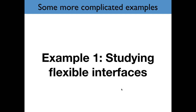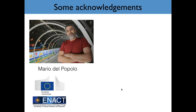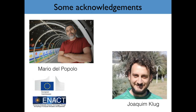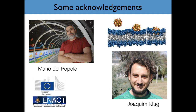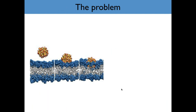My first example is about studying flexible interfaces. This is some work I did recently, about two years ago, as a collaboration with Mario Del Popolo in Mendoza, Argentina, and his former postdoc Joaquin Klag. The problem they were interested in involved the binding of nanoparticles to biological membranes. They were using the distance between the center of mass of the membrane and the center of mass of the nanoparticle as a collective variable, but found the membrane would bend during simulation — the center of mass would be in the center of the cell, not indicative at all of the actual distance to the membrane surface.